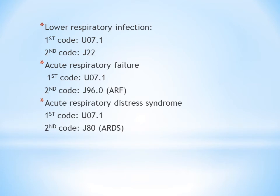All conditions follow the same pattern. Lower respiratory infection, acute respiratory failure, and acute respiratory distress syndrome are all respiratory manifestations of COVID-19. If the COVID-19 patient is affected with any of these conditions, first code U07.1 for COVID-19, then code the specific manifestation: lower respiratory infection J22, acute respiratory failure J96.0, or ARDS J80. Always code U07.1 first, and secondly the respiratory manifestation code.